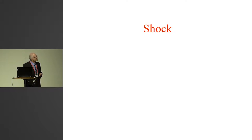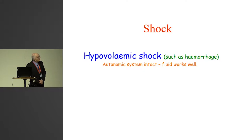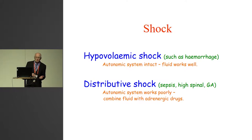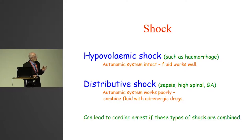A few words about shock. We anesthetists tend to believe that shock is only hypovolemic. In hemorrhage that's so, and as long as the autonomic system is intact, fluids work very well to restore the situation. But we often have something else — distributive shock — which is very typical of sepsis and of general anesthesia in general. If you have reduced arterial pressure during general anesthesia, we're in a situation of mild distributive shock. Here we have a blunted adrenergic system and fluids alone will not work. The dangerous thing is when we combine the two — distributive shock with added hypovolemic shock — then the situation can be quite dangerous.